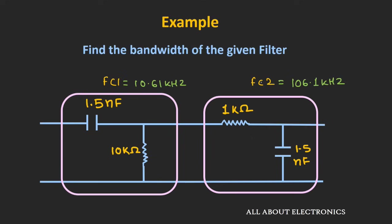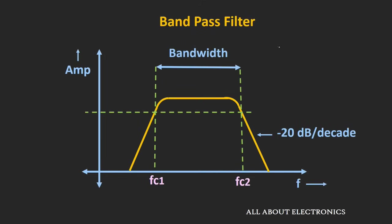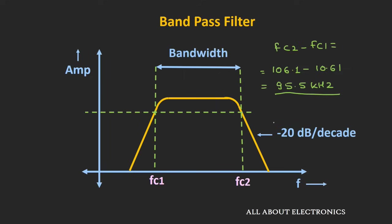The bandwidth of this bandpass filter is defined as the difference between the two cut-off frequencies. So the bandwidth equals FC2 − FC1 = 106.1 kHz − 10.61 kHz = 95.5 kHz. Roughly, we can say this bandpass filter has a bandwidth of about 100 kHz.